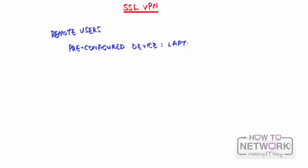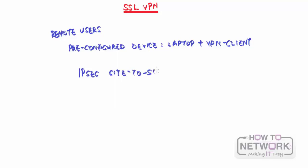A pre-configured device could be something like a laptop that has a pre-installed VPN client. You want a VPN client because even though users are connecting from anywhere, you want them to connect securely since they are accessing the company's resources. In previous videos we've seen how to configure IPSec site-to-site VPN, but IPSec also offers remote access.